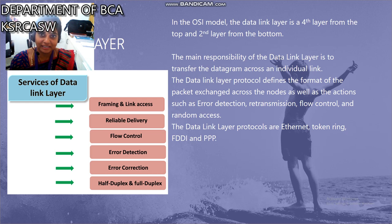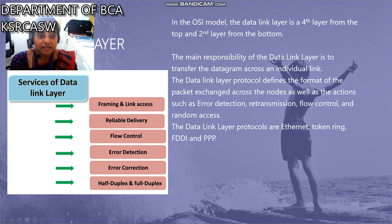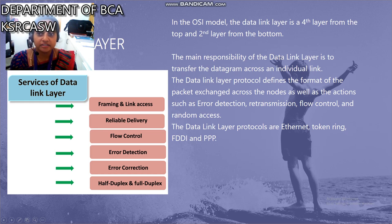The data link layer is one of the OSI model layers. It is the fourth layer from the top and the second layer from the bottom. The main responsibility of the data link layer is to transfer the datagram across an individual link. The data link layer protocol defines the format of the packet exchanged across the nodes, as well as actions such as error detection, retransmission, flow control, and random access.